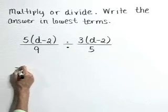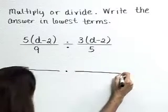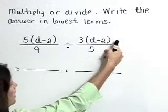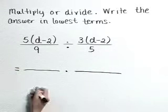Now we're first going to change this into a multiplication problem by multiplying by the reciprocal of the divisor. Here we go.